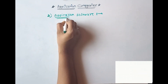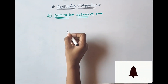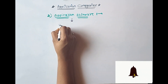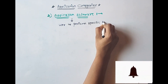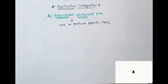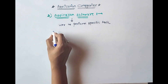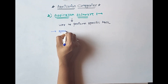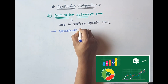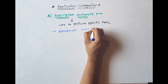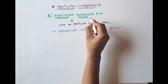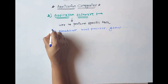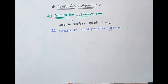The second category is application software. Application software means the software which helps the user to perform a specific task. Examples include spreadsheets, word processors, and games, which all come under application software.